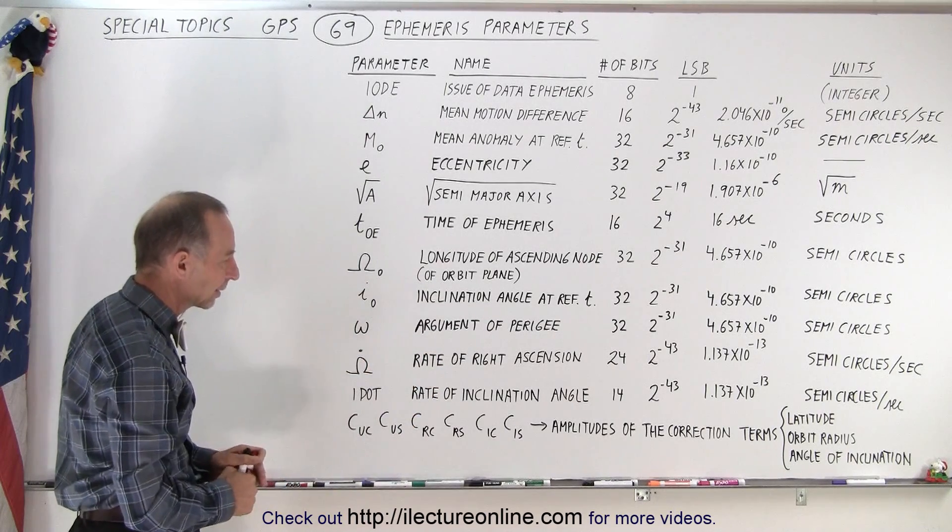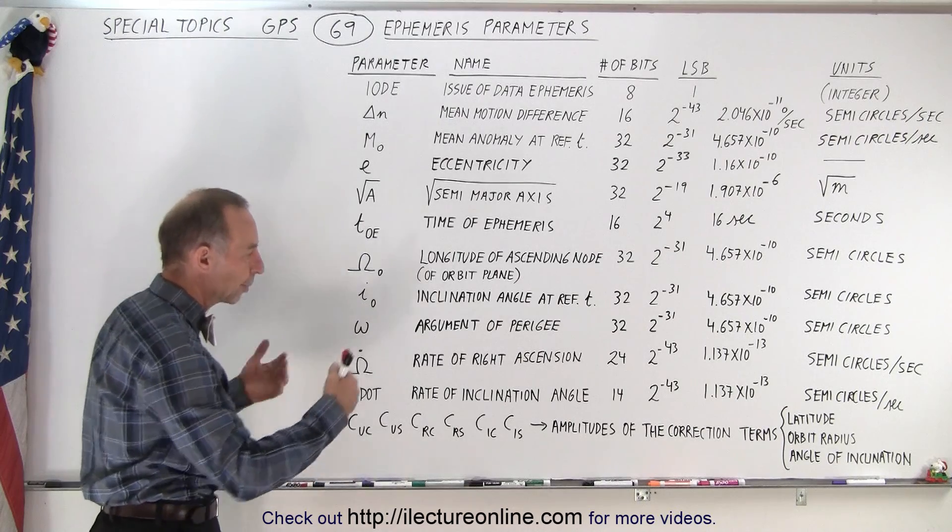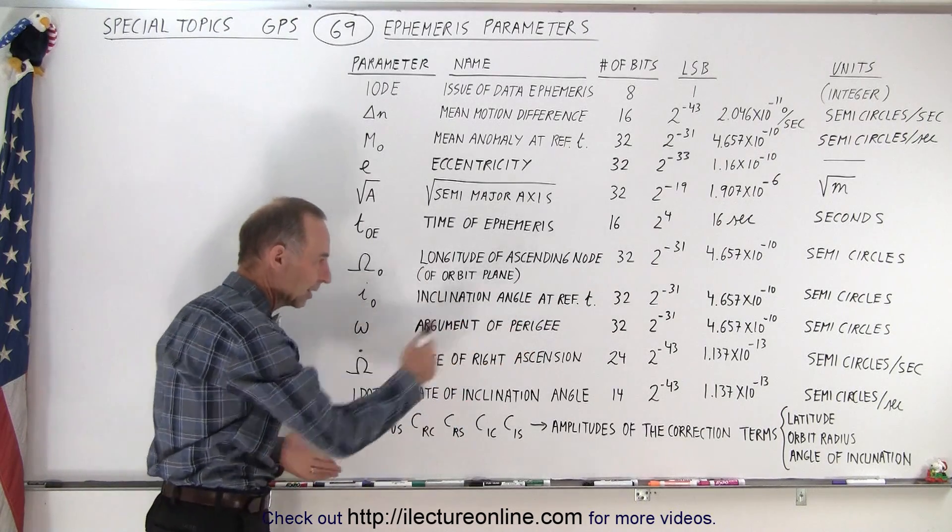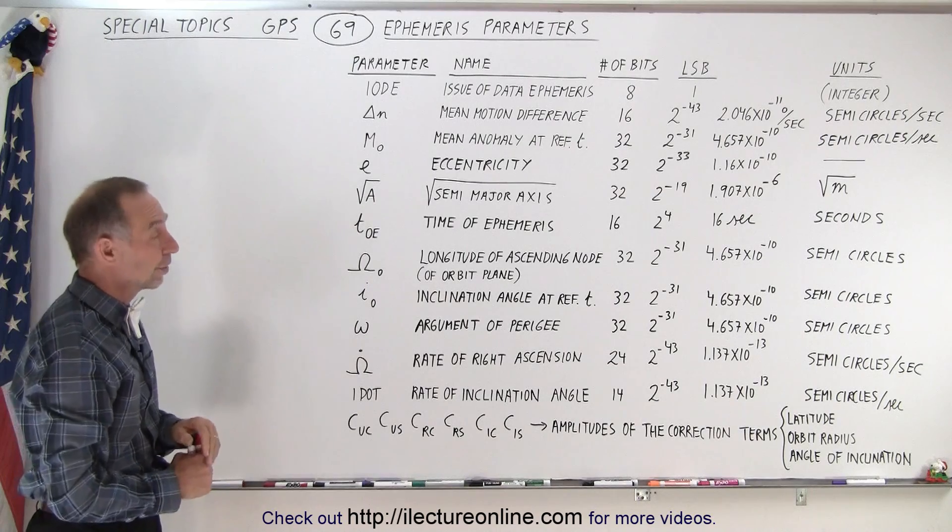these are the six coefficients or amplitudes that are plugged into an equation to calculate the variations in those three parameters.